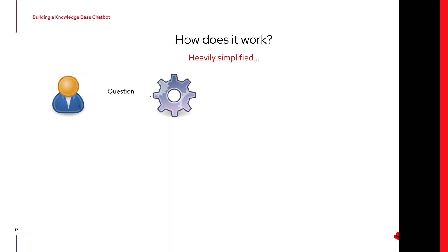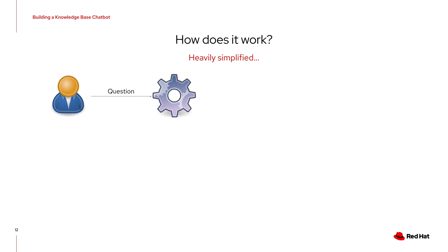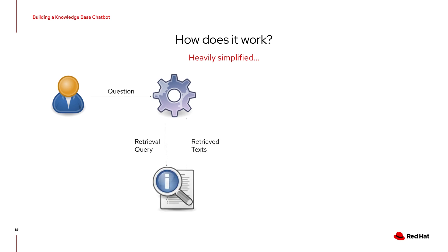The RAG pattern — how does it work? The user asks a question, sent to the processing backend. Based on this question, a query is made to the knowledge base. Documents relevant to the query are sent back and are added to the original query. This new augmented query is then sent to the LLM. The model is now able to generate an answer based on the documents that were retrieved.